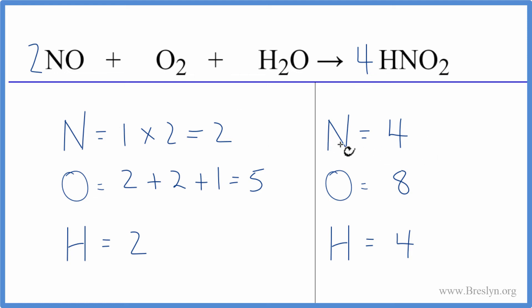Let's balance the nitrogens. So to get 4 nitrogens this coefficient needs to change to 4 and then we can update these numbers here. So we have 1 times 4 for the nitrogen, that's 4 nitrogens.